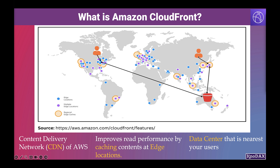Edge locations provide reliable, low latency and high throughput network connectivity. As you can notice in the screenshot, the content from the S3 bucket that is in the Australia AWS region is viewed by users in North America and Asia through edge locations using CloudFront distribution.